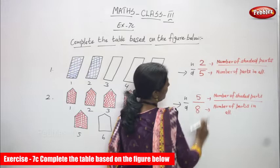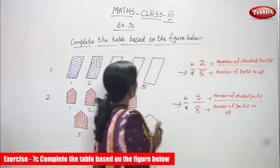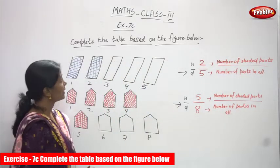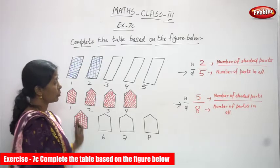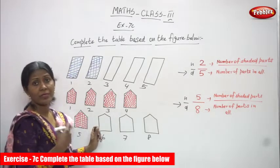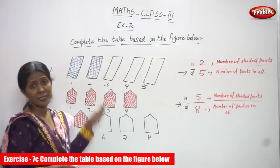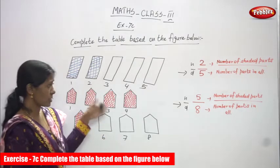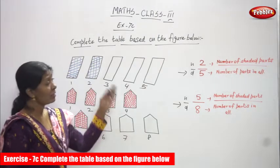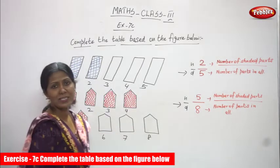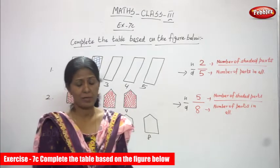First diagram, fraction is 2 by 5. I think you understand how to complete the table based on the figure and also the fraction. If they give you diagrams or shapes, you have to find out the fraction and write it. I think you understand the concept well. Thank you.